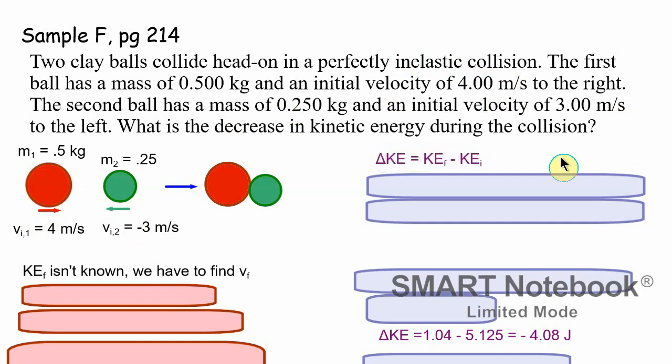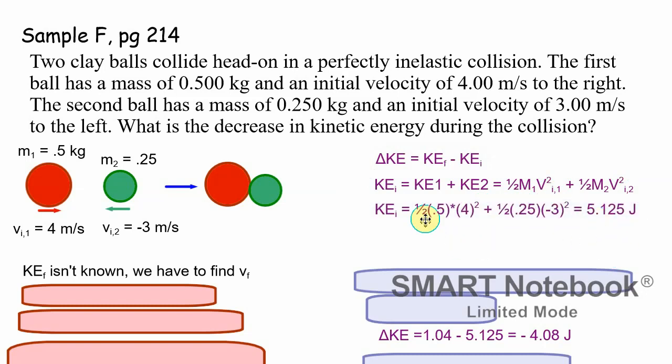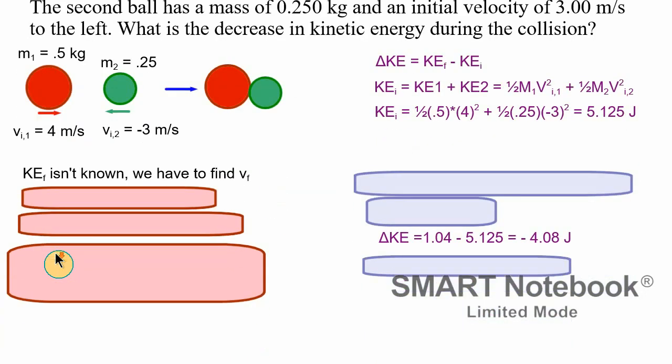So decrease in kinetic energy just means what's the change in kinetic energy. So that's the final minus the initial kinetic energy. Well, I can do the initial kinetic energy pretty easy because I know all the information about the two balls in the beginning. So that's just one half mv squared for both of them. And so the mass of the red ball, the initial speed of the red and green balls. So one half red ball is 0.5 times four green ball one half times 0.25 times negative three squared. It doesn't really matter if the negative is there or not, but I put it in just to be consistent. And so I got an initial kinetic energy of 5.125.